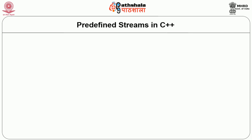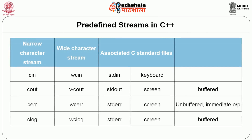There are predefined streams in C++ for narrow characters and wide characters. cin, cout, cerr, and clog are the narrow character streams, whereas wcin, wcout, wcerr, and wclog are the wide character streams. cin is associated with the standard input device — keyboard. cout, cerr, and clog are associated with the standard output device, standard error device, and standard log device respectively. Usually the standard devices are the screen for these things.